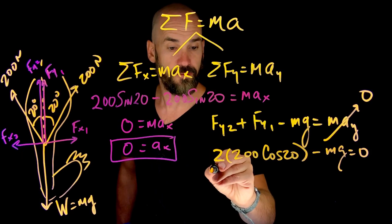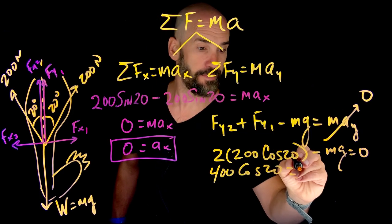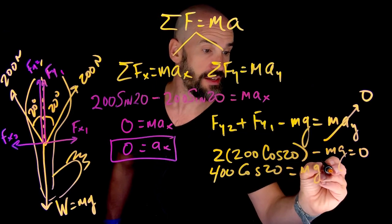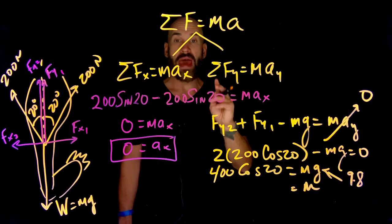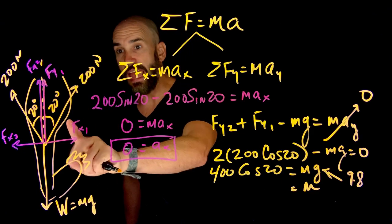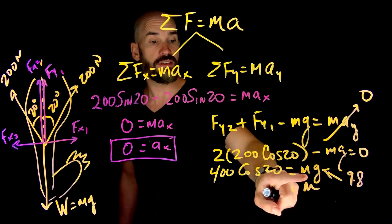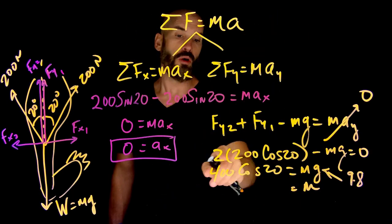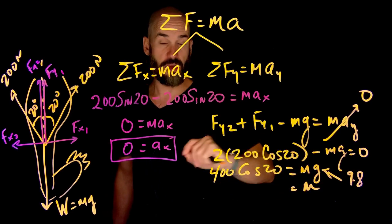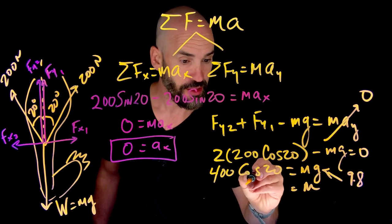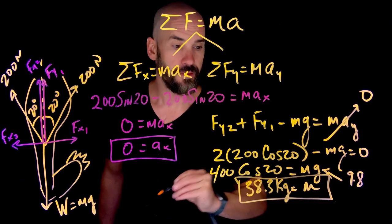That gives us 400 cosine of 20 equals mg. With g equal to 9.8, I just put 400 cosine 20 into a calculator and divide by 9.8, and the mass comes out to 38.3 kilograms.